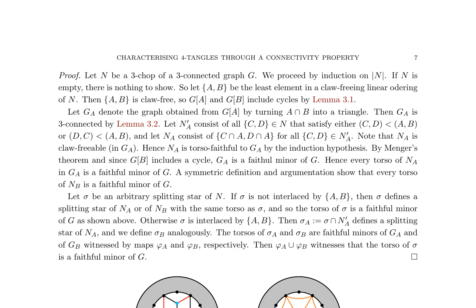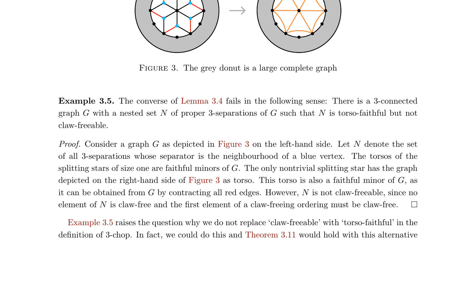Starting with a three-chop N of a three-connected graph G, the authors consider a least element (A, B) in a claw-free linear ordering of N, which is claw-free by Lemma 3.1. A graph GA is constructed by turning A ∩ B into a triangle, which is three-connected by Lemma 3.2. The authors define sets NA and NB, show NA is claw-freeable in GA, implying NA is torso-faithful to GA by induction. Menger's theorem in G, B, including a cycle, implies GA is a faithful minor of G, making every torso of NA in GA a faithful minor of G. Symmetrically, every torso of NB is also a faithful minor of G.